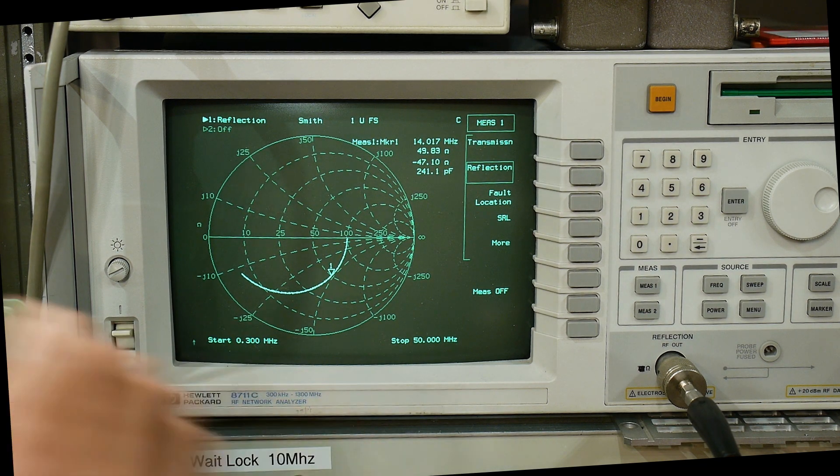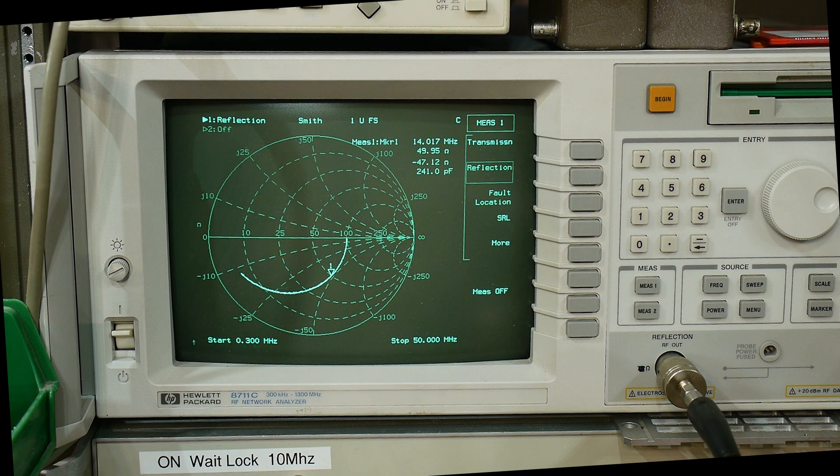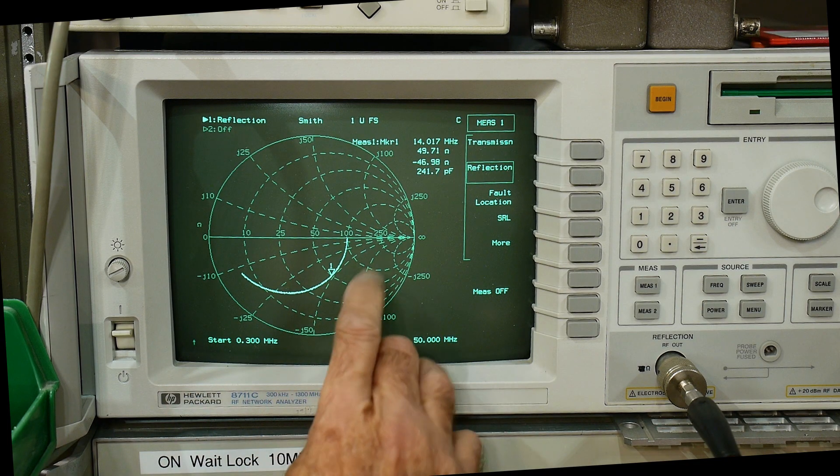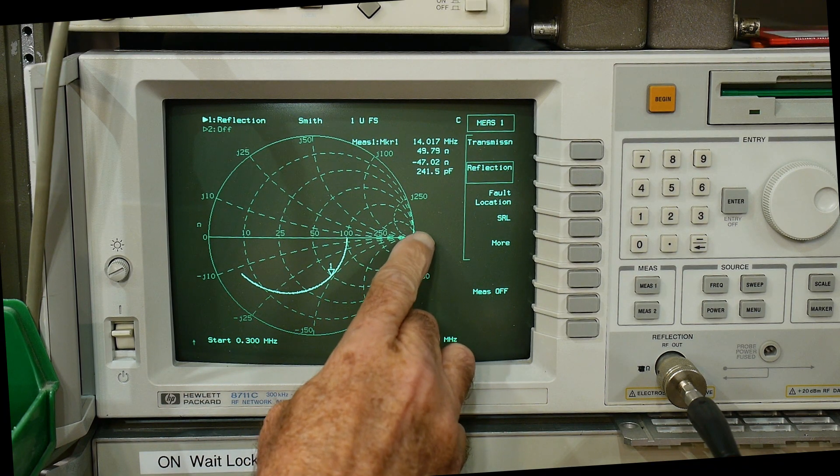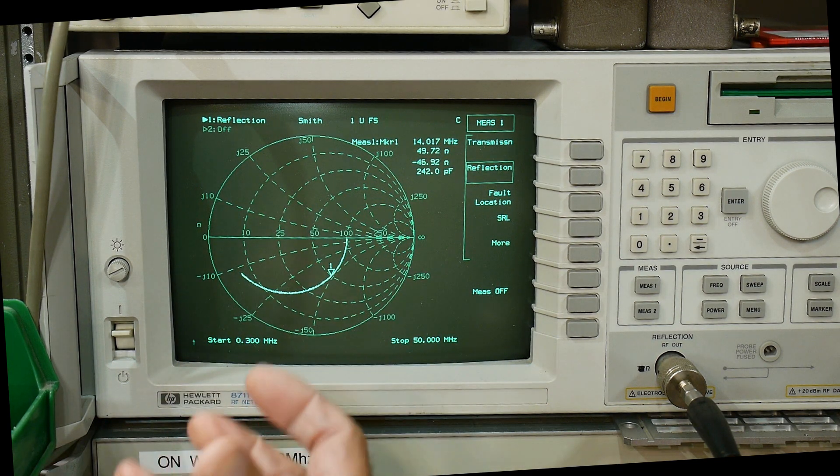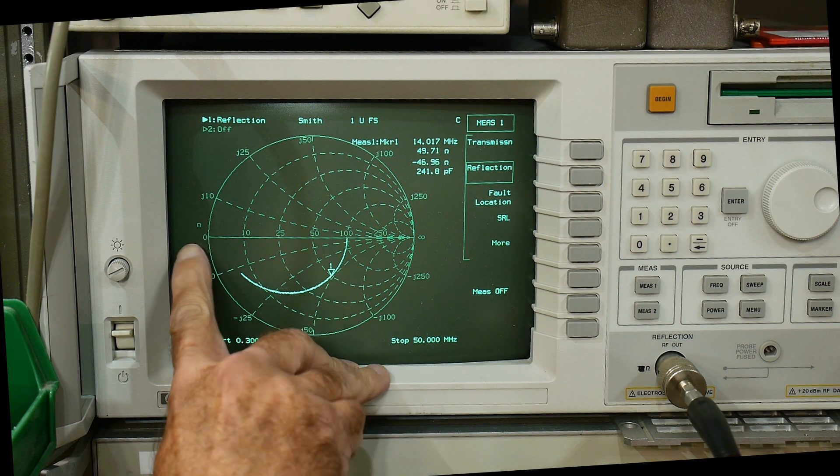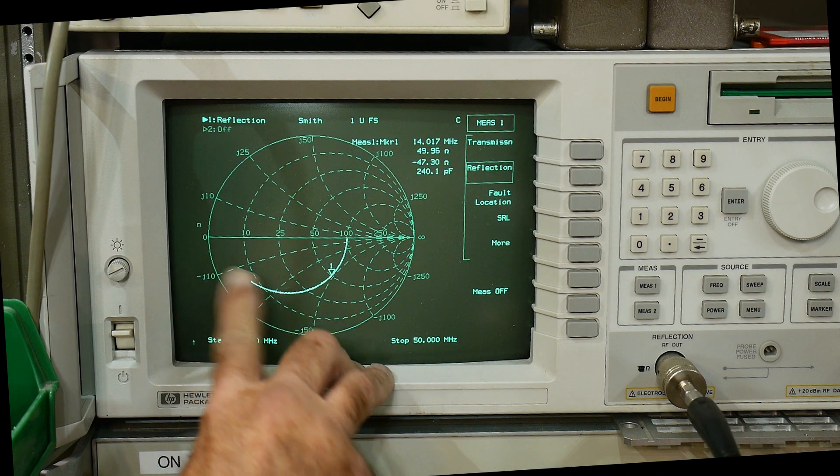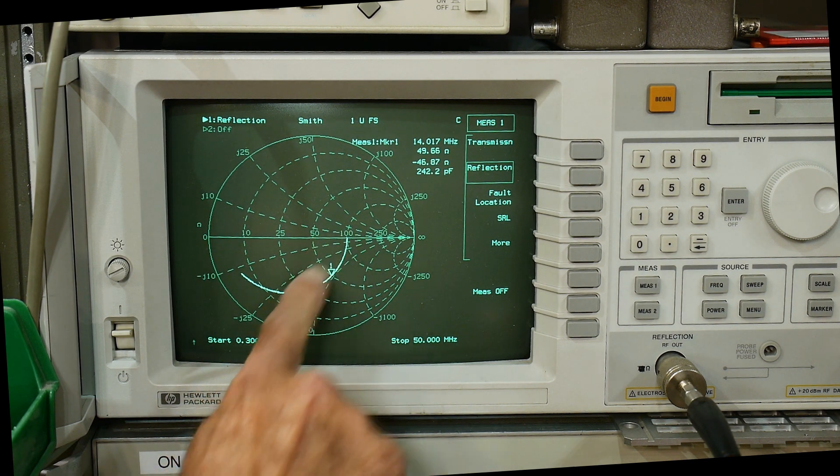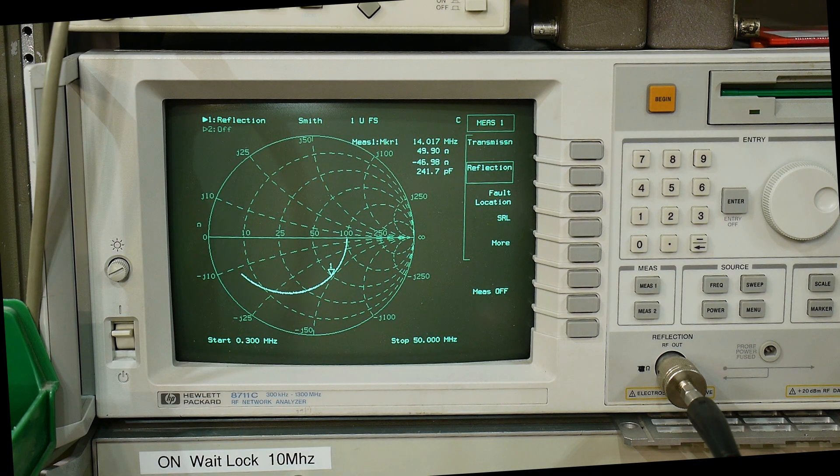Remember I said that if you have something in series the very best you can do is have an open, and the higher values you end up going over here to the open which is infinity. But when things go to ground they can short out and go to a short condition. Everything's going to travel here over to the short which is zero ohms. Instead of traveling on this curve it's traveling on this curve.